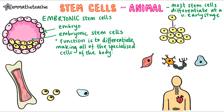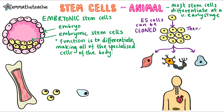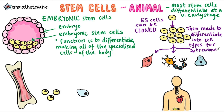But scientists have come up with another use. Embryonic stem cells can be cloned and then induced to differentiate into lots of different cell types. These can then be used for the treatment of conditions where cells in the body aren't working properly. For example, paralysis is when nerves are damaged — the body can't make new nerve cells on its own, so using stem cells to make more could potentially cure paralysis.